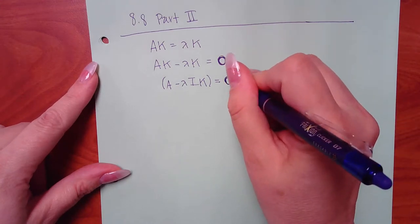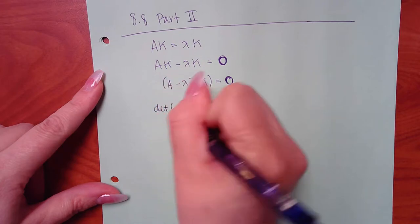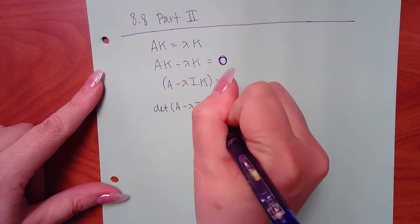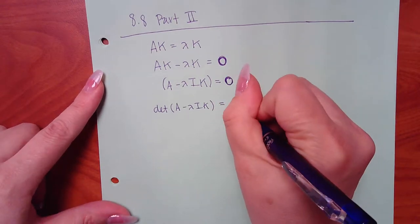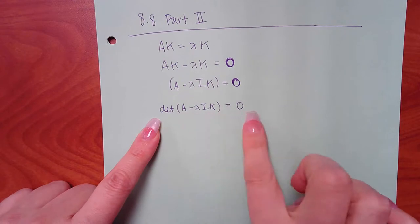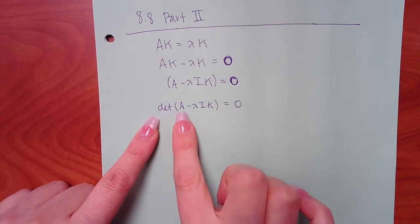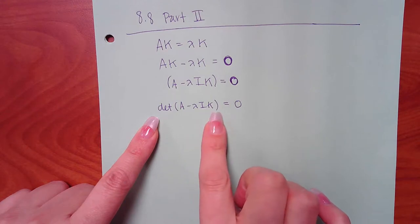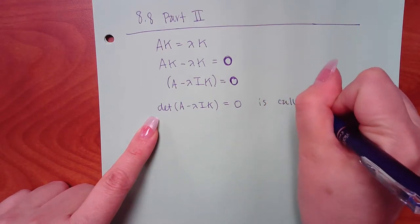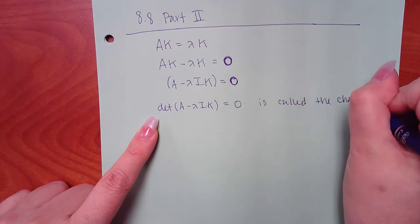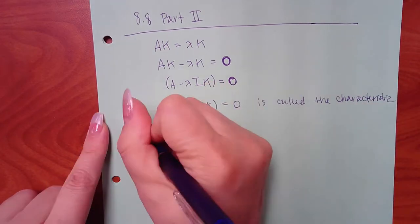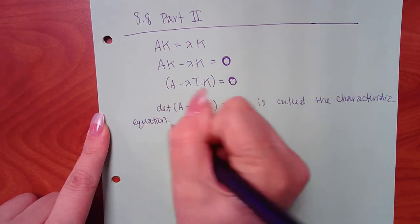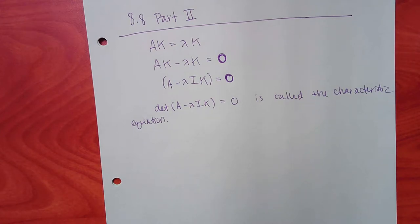If you take the determinant of this, you should get the number zero. The equation det(A minus lambda I) equals zero is called the characteristic equation — kind of like our auxiliary equation from differential equations. This equation helps us identify the solutions.